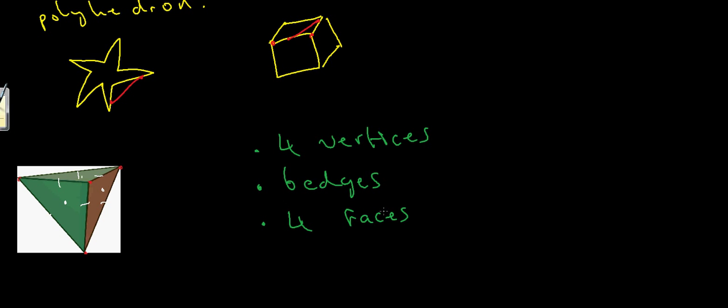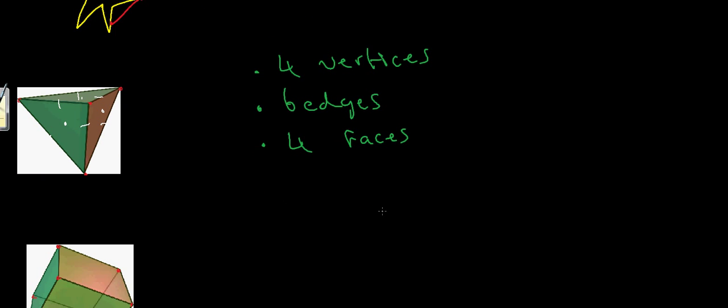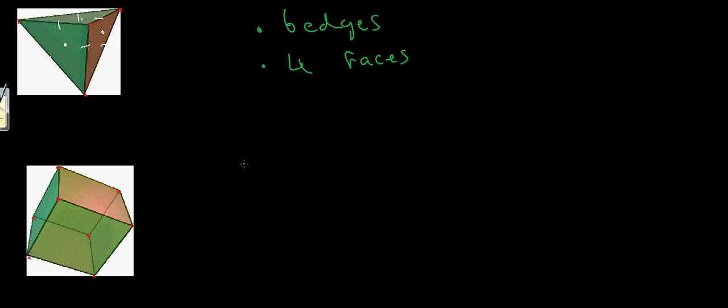Now let's look at the next example. Here we've got a cube. How many vertices does the cube have? We've got one, two, three, four along the top, and on the bottom we've got one, two, three, four — so that's a total of eight vertices.